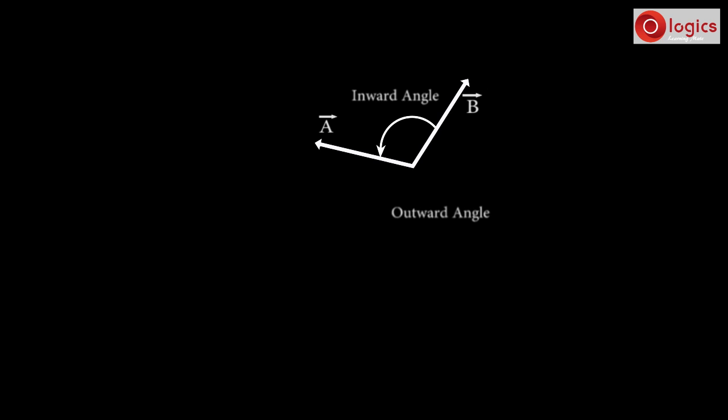And this is the outward angle between two vectors. To define the angle of vector, the angle should always be the smaller one. That is, inside angle.